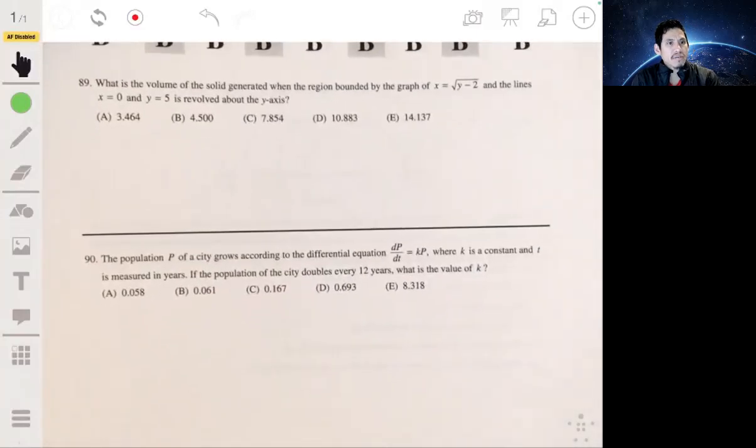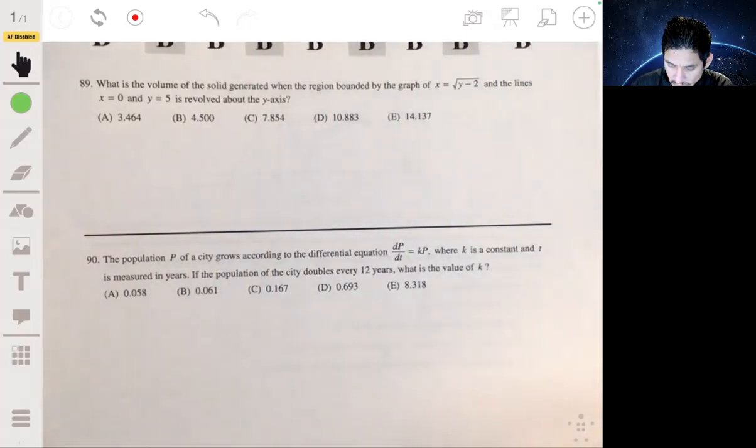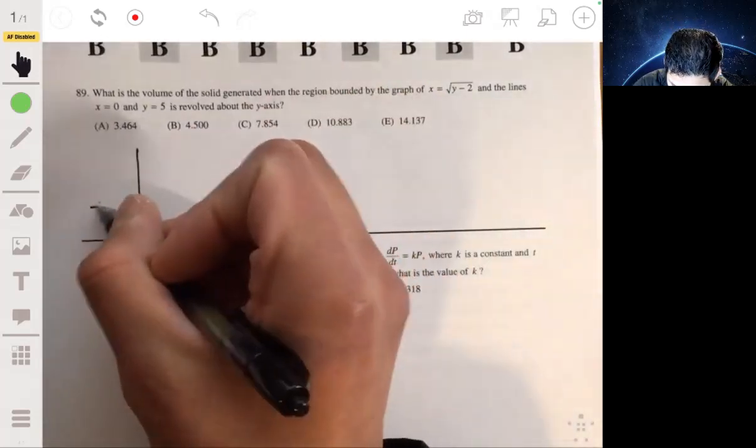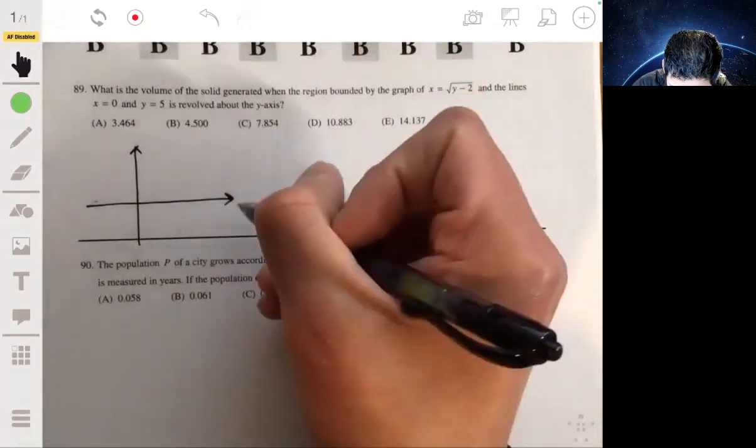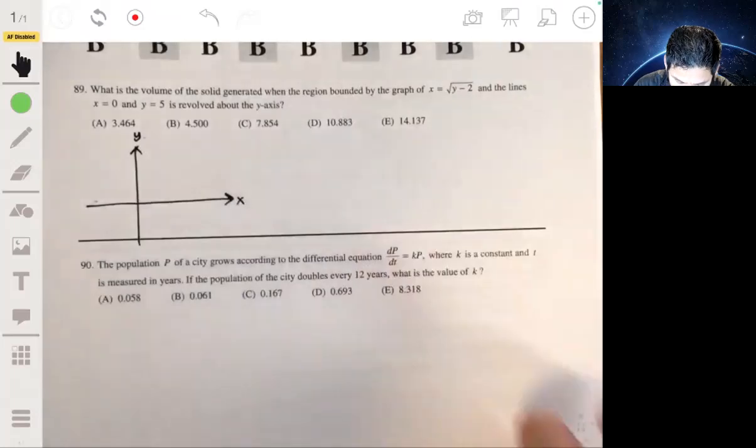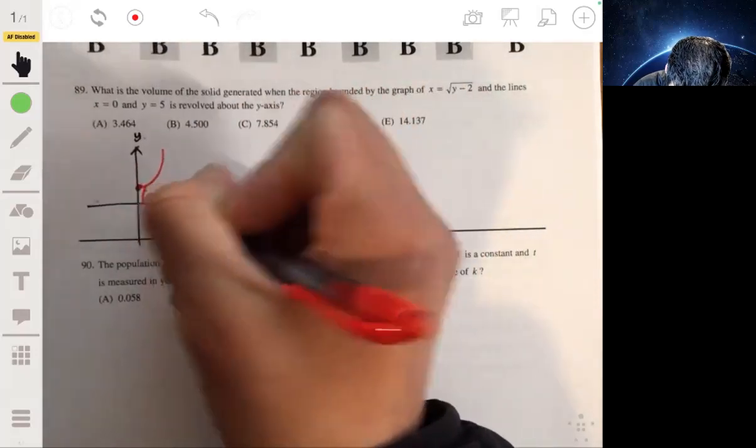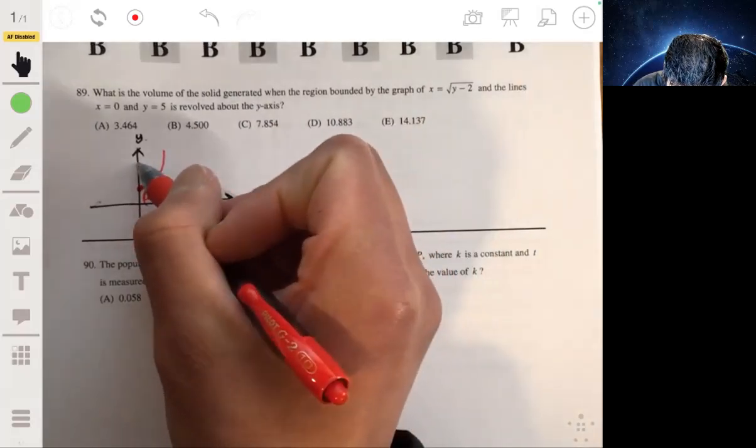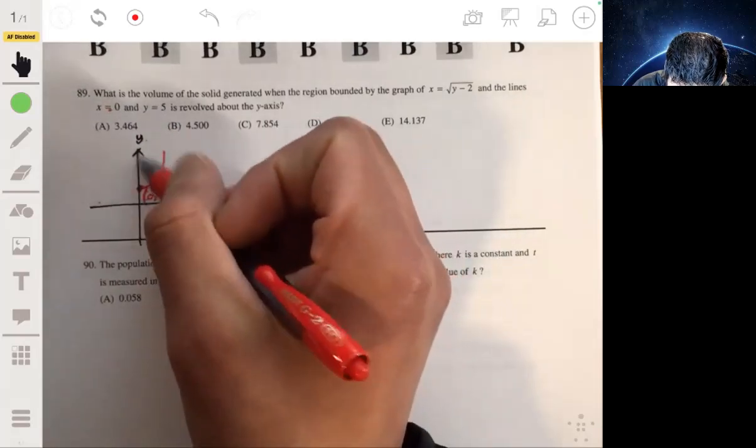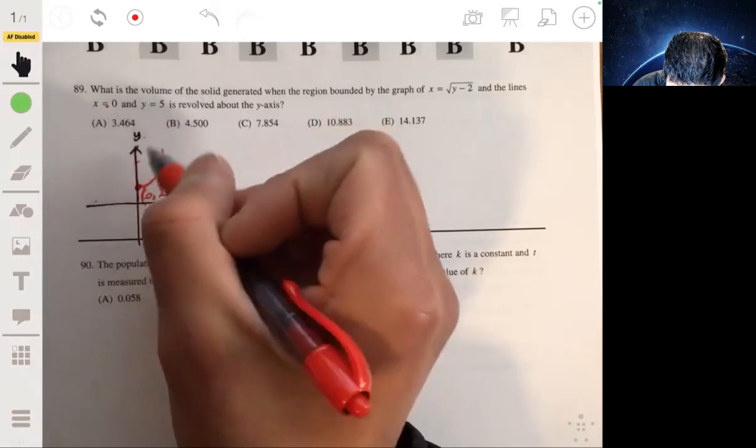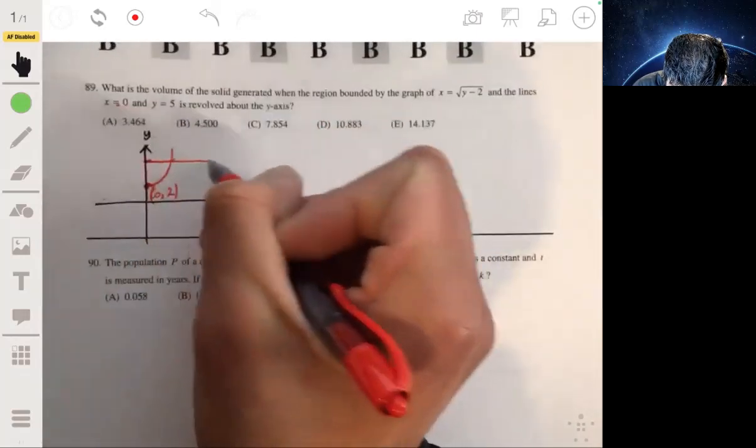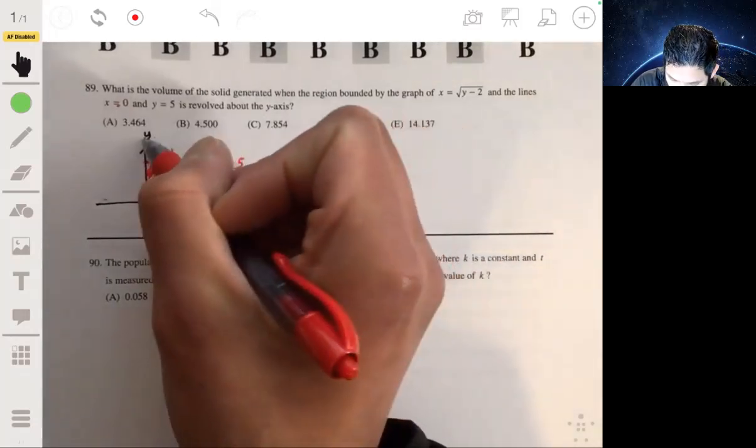Let's go to problem 89. Right here, we have the volume of the solid generated when the region bounded by the graph of x equals the square root of y minus 2, and the lines x equals 0 and y equals 5. So what's the volume of the solid when they revolve it around the y-axis? This would look something like, this is x versus y. Let's see, we're looking at basically something like this. That would be 0 to 2, 0 to 5, it seems. From x equals 0, so the y-axis, y equals 5. Let's say y equals 5. So this region here, and we're revolving it around the y-axis.